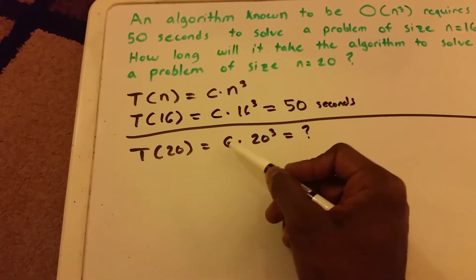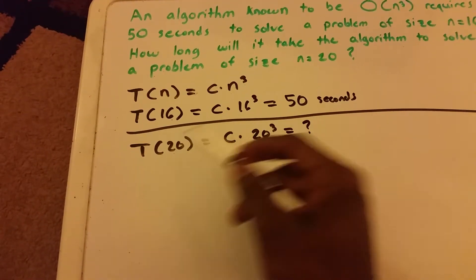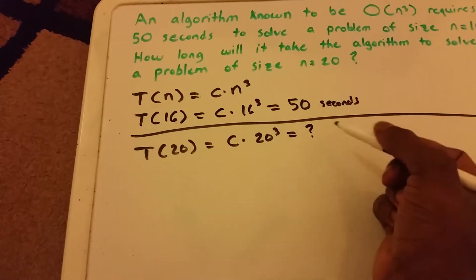But notice this constant here. If we can figure out what that constant is, we can solve for T of 20, and we can get our answer.